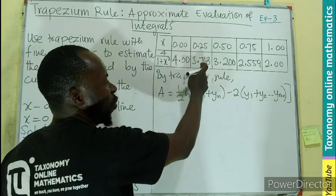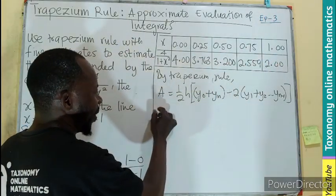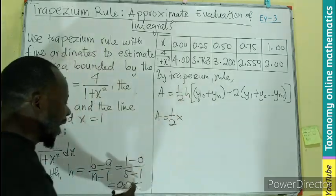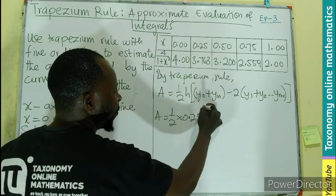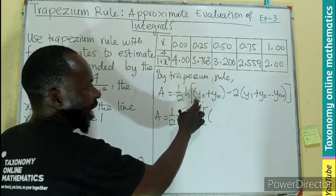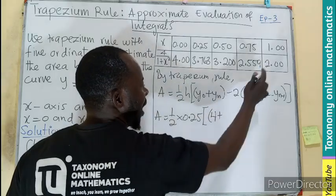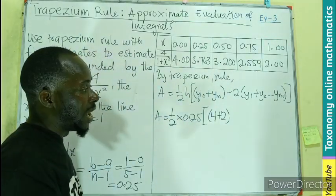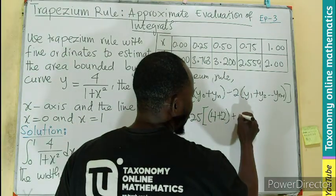So we have y₀, y₁, y₂, y₃, y₄. The area becomes (1/2) × 0.25 × [4 + 2 + 2(y₁ + y₂ + y₃)]. The first term is 4, the last term is 2.